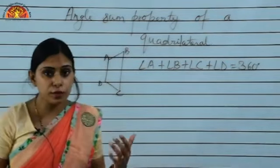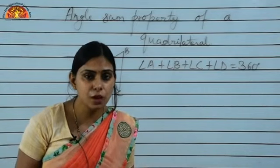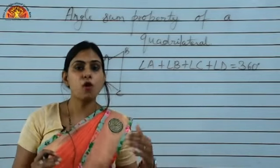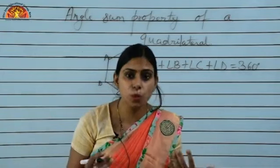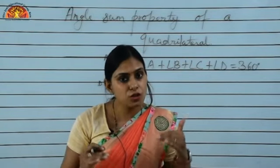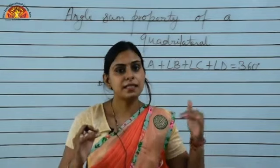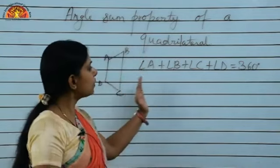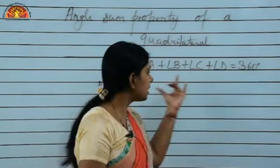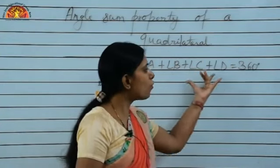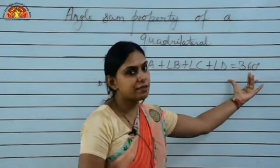The angle sum property of a triangle — sum of all 3 angles — is equal to 180 degrees. And for a quadrilateral, the sum of all angles is equal to 360 degrees. There are 4 angles, so the sum of all 4 angles comes out to be 360 degrees.